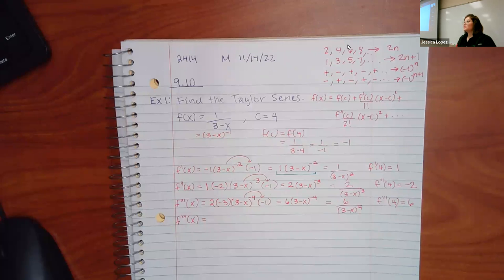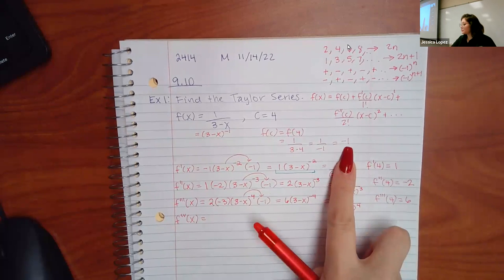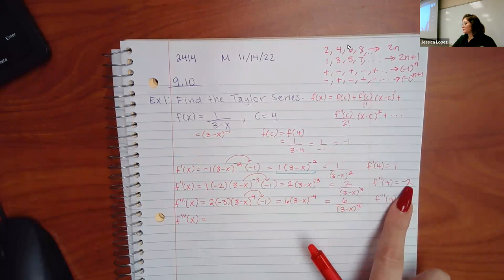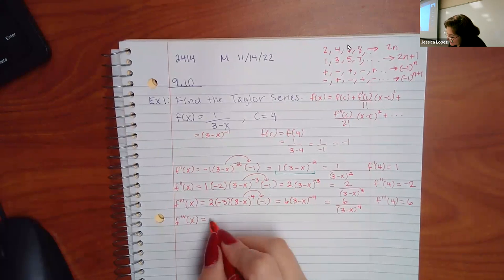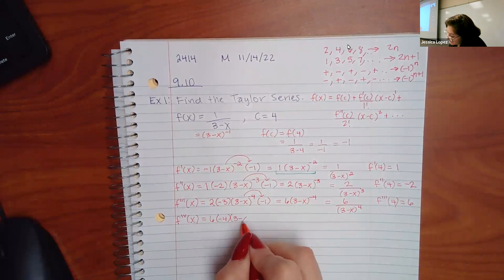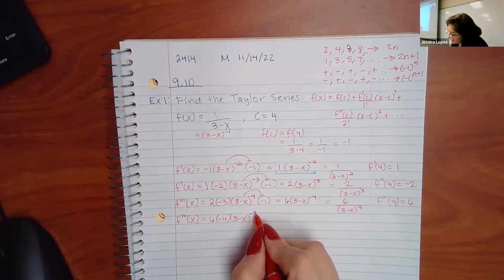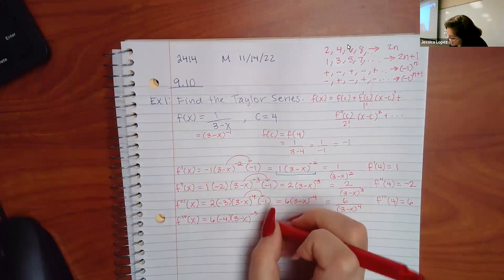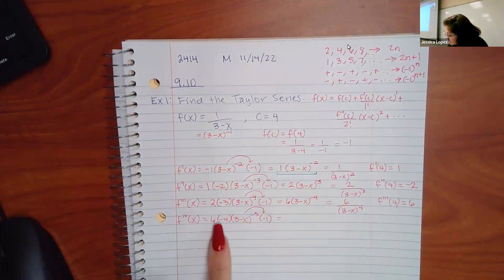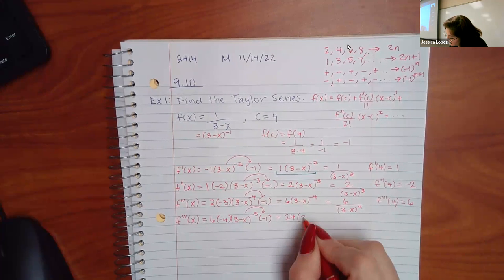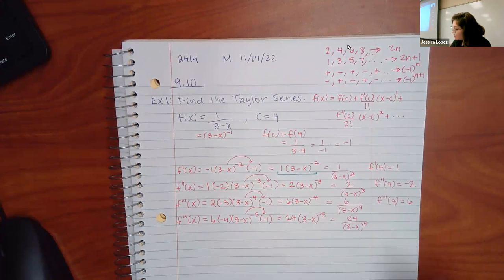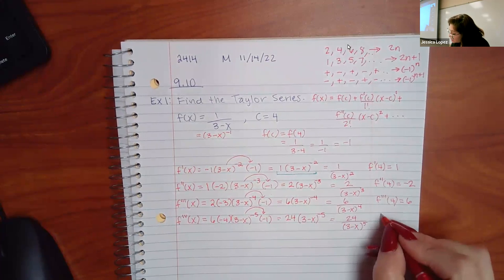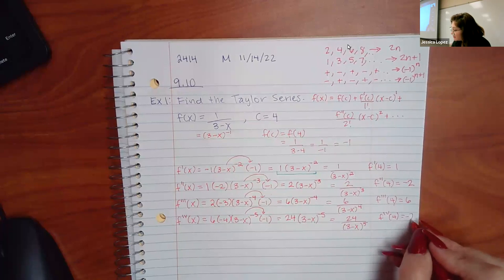These values are actually 0 factorial with a negative, 1 factorial with a positive, 2 factorial with a negative, 3 factorial with a positive — so the next one is going to be 24, because 4 factorial is 24. Taking the fourth derivative: keep the constant multiplier of 6, bring down negative 4, decrease to negative 5, apply chain rule negative 1. That gives positive 24 times (3−x)^(−5), or 24/(3−x)⁵. Plugging in 4 gives 24/(−1)⁵ = negative 24.